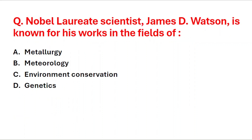Next question: Nobel laureate scientist James D. Watson is known for his works in the field of — A: metallurgy, B: meteorology, C: environment conservation, D: genetics. The right answer is option D, genetics.